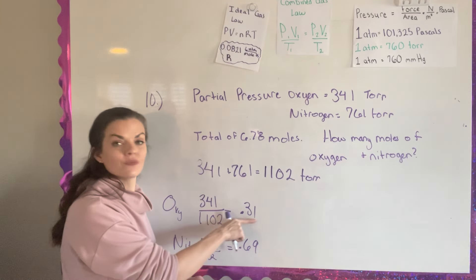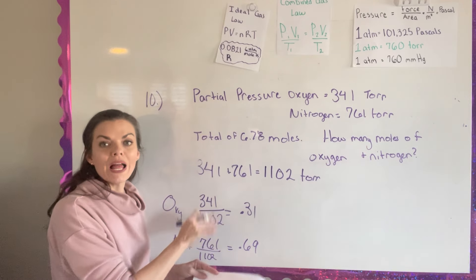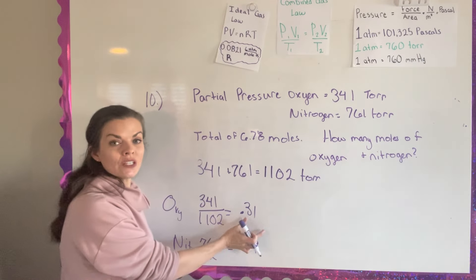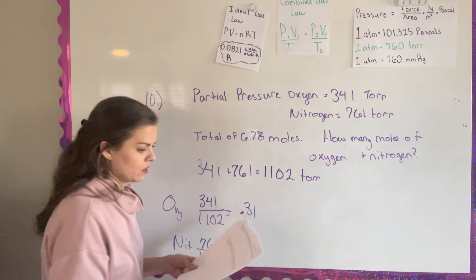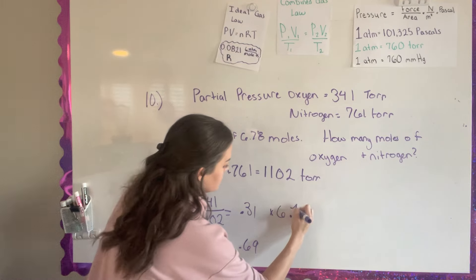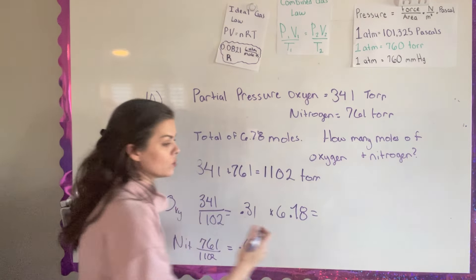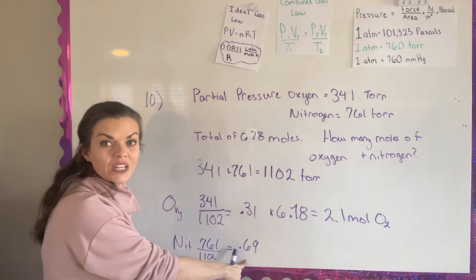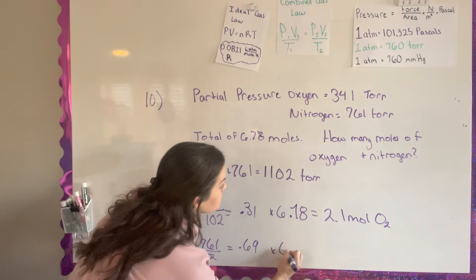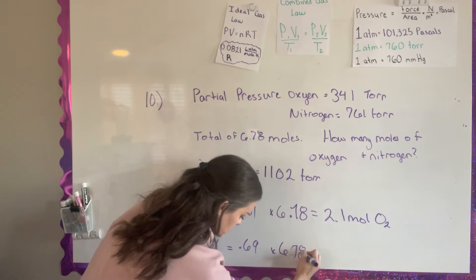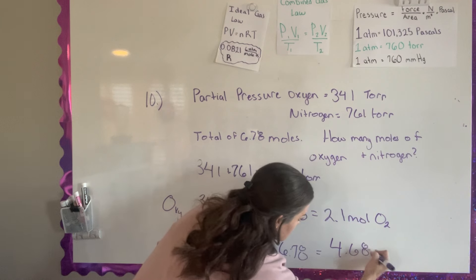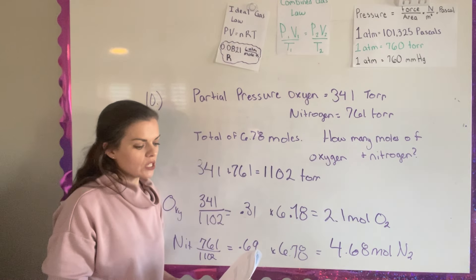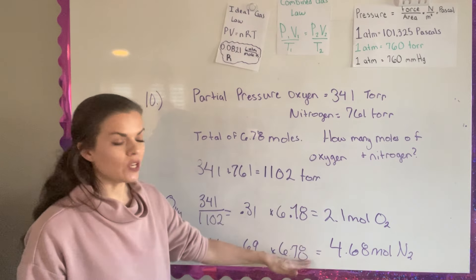Now I take these fractions and use them to figure out the moles. If the whole balloon has 6.78 moles, I need to find what 0.31 of that is. Taking 0.31 times 6.78 gives 2.1 moles of oxygen. Taking 0.69 times 6.78 gives 4.68 moles of nitrogen. A way to check yourself is to add these up — they should equal what you started with, though there may be a slight difference from rounding.